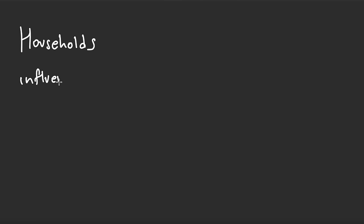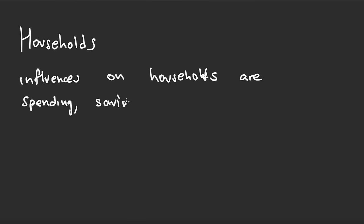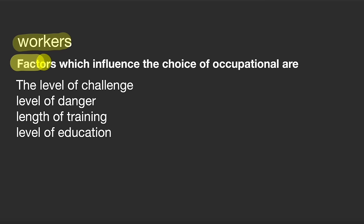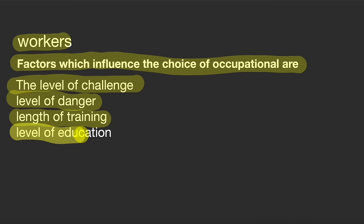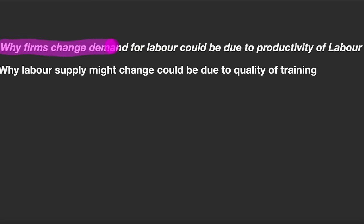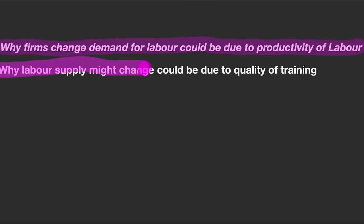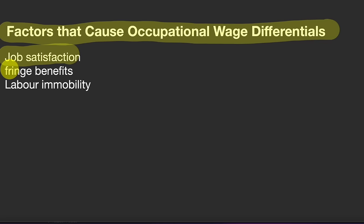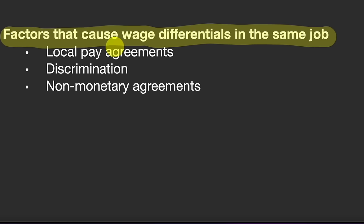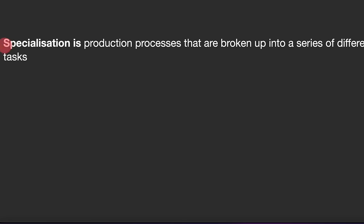Households are influenced by spending, saving, and borrowing decisions. Factors which influence a worker's choice of occupation include level of challenge, level of danger, length of training, and level of education. Firms' demand for labor may change due to the productivity of labor, while labor supply might change due to the quality of training. Factors causing occupational wage differentials include job satisfaction, fringe benefits, and labor immobility.